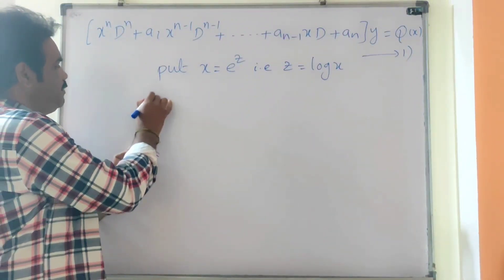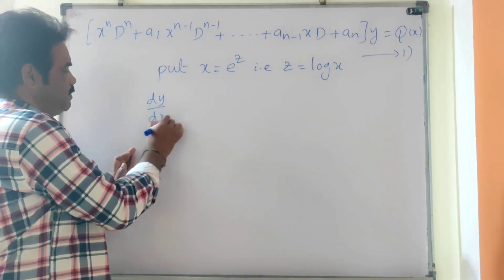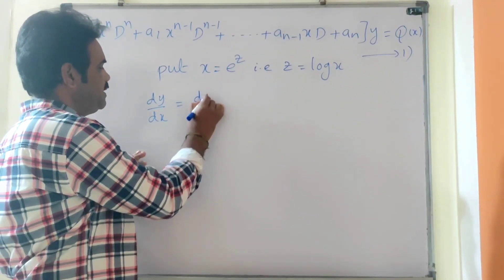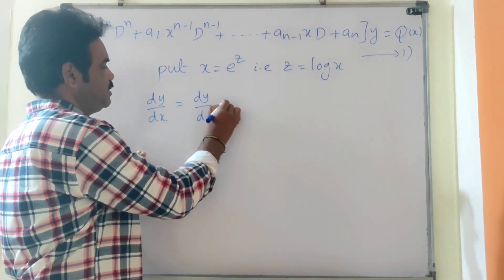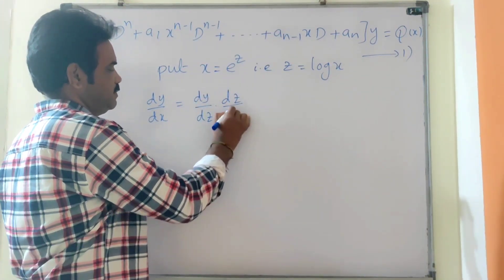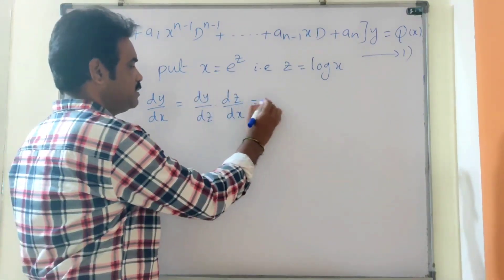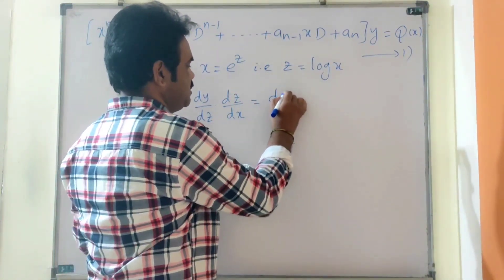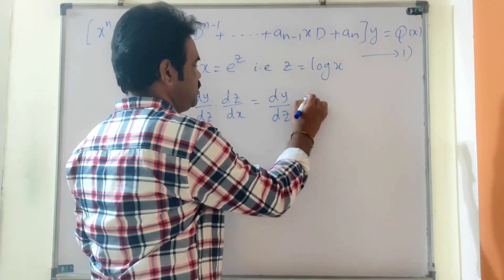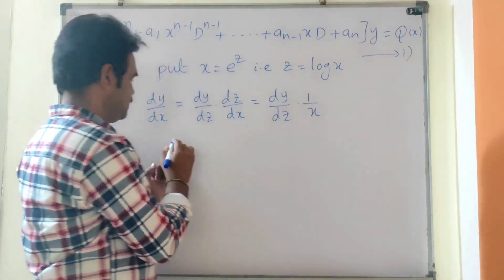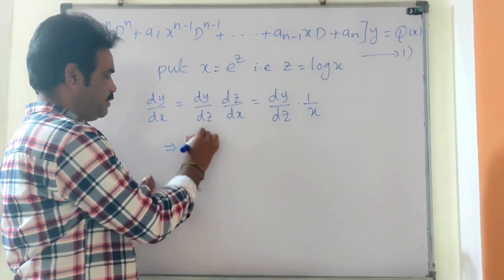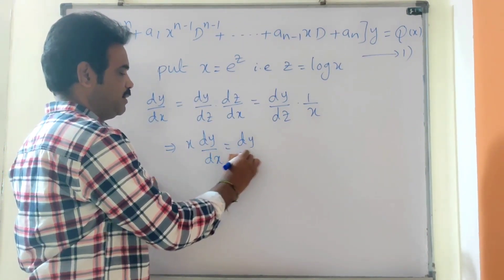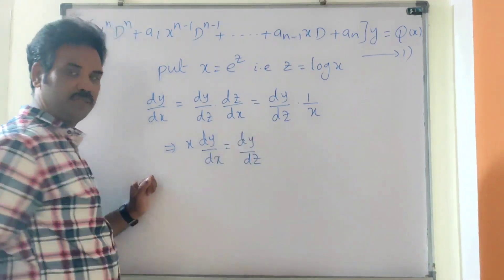So now, dy/dx = (dy/dz) · (dz/dx). But z = log x, so dz/dx = 1/x. Therefore, dy/dx = (dy/dz) · (1/x), which gives x·(dy/dx) = dy/dz.